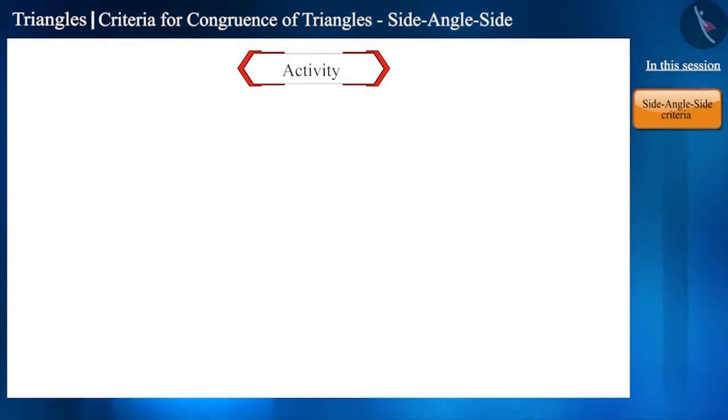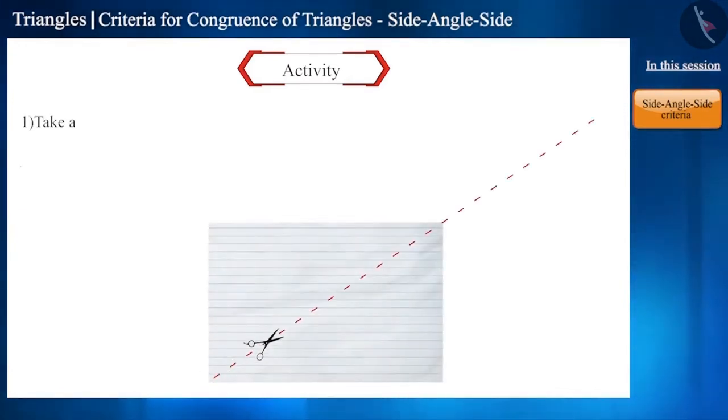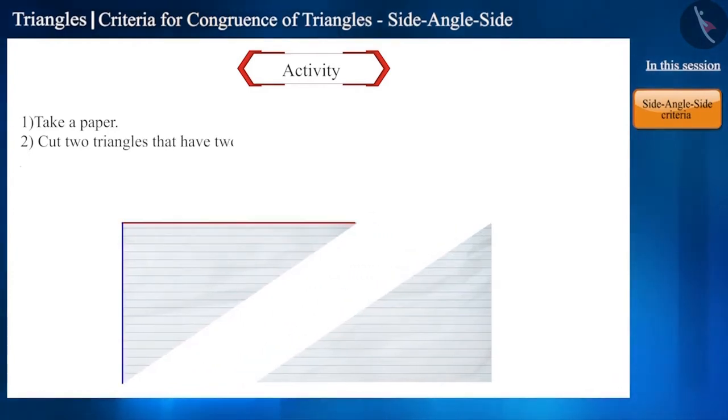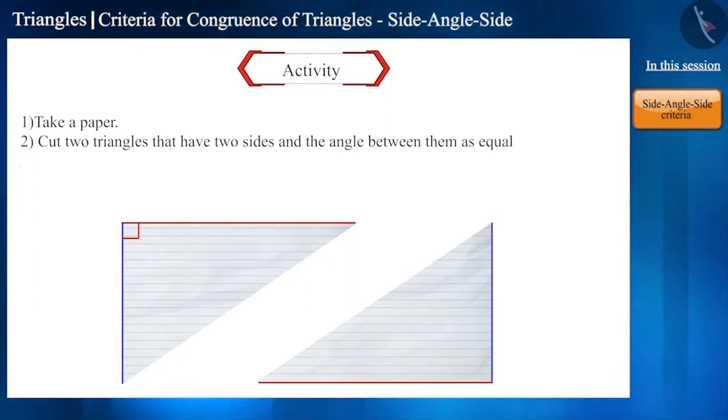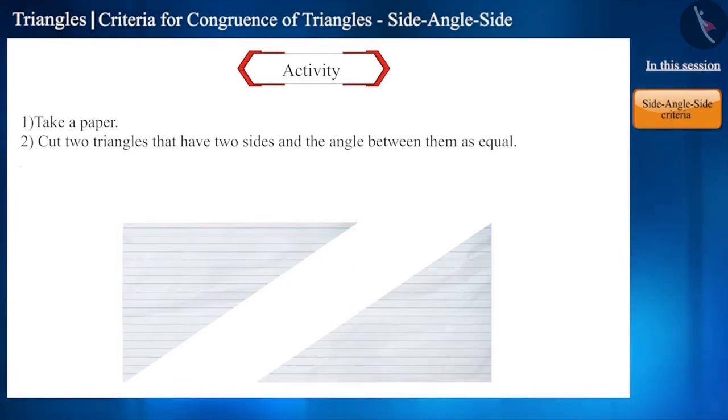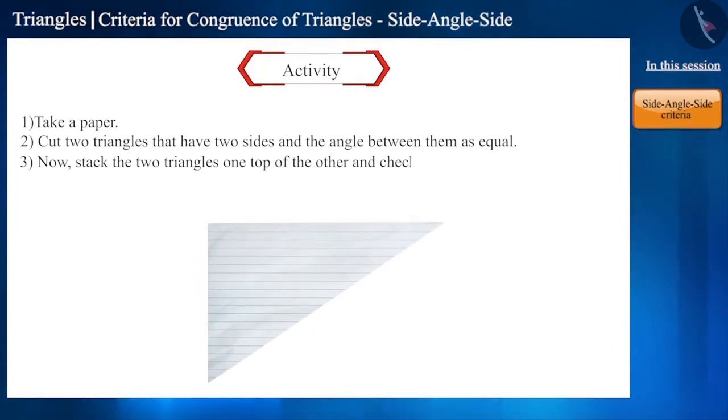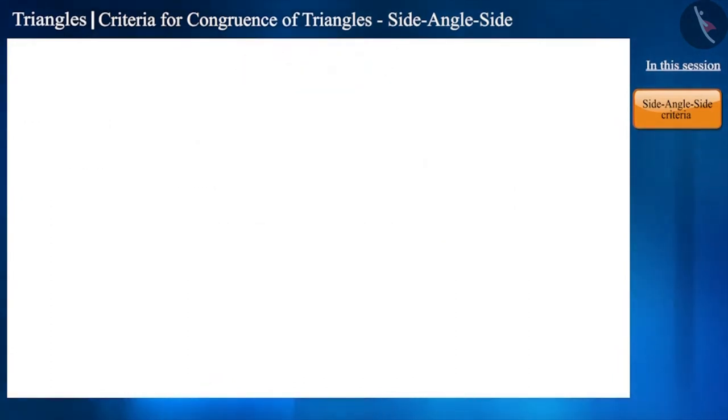Why don't you do an activity? Cut two triangles from a paper in such a way that the two sides and the included angle of one triangle are equal to the two sides and the included angle of the other triangle. And then look at the two triangles by stacking them one on top of the other. Are they fitting exactly one on top of the other? Check!